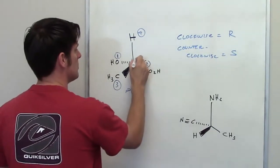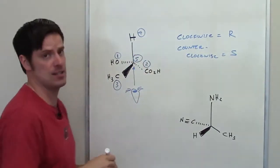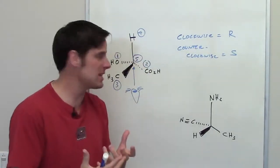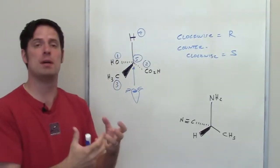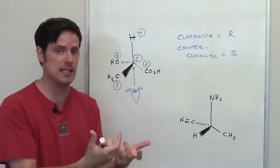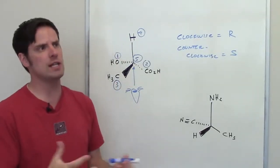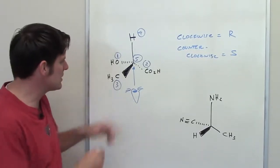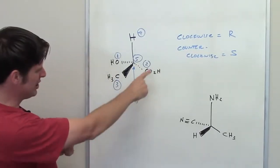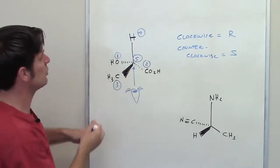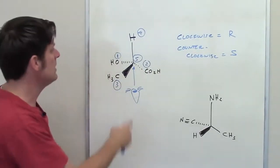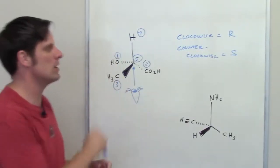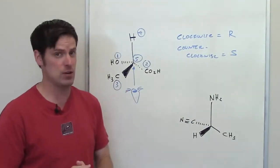Tracing from one to two to three in that scenario would actually be counterclockwise, so this molecule is indeed S. If you have a hard time seeing that, you're welcome to build a three-dimensional model using a model kit or marshmallows and toothpicks, until you can clearly see that going from one to two to three with group four pointing away from you traces counterclockwise and gives you an S configuration.